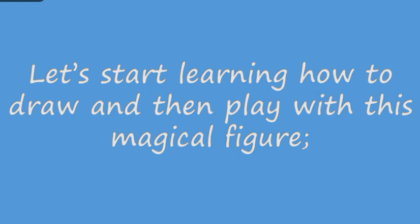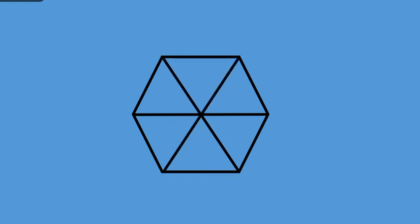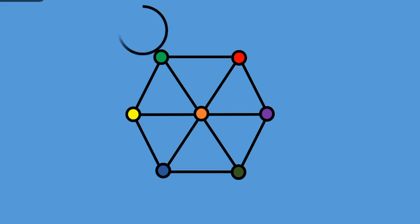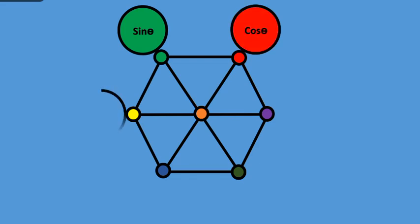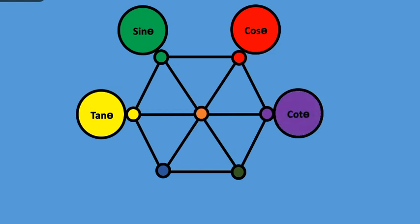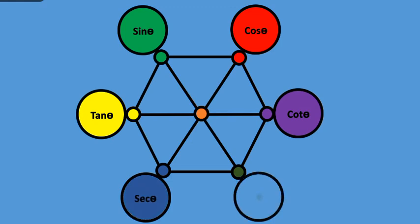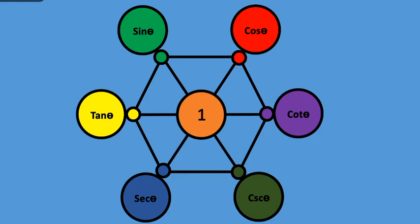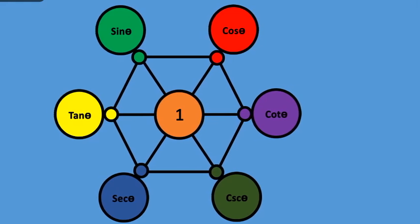Let's start learning how to draw and then play with this magical figure. Here is a regular hexagon with its three diagonals drawn. There are seven points: six vertices and the center. Write the first trigonometric function sine of theta, second cosine of theta, third tan of theta, fourth cot of theta, fifth secant of theta, sixth cosecant theta, and in the center write one.